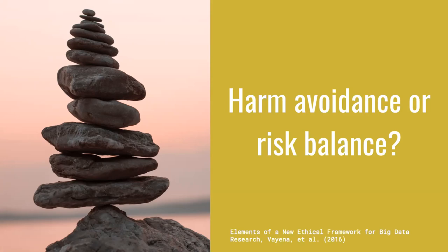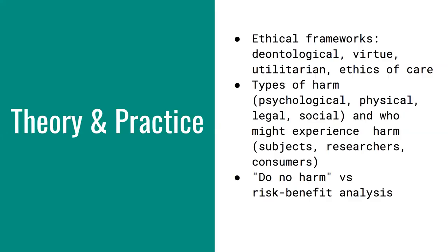The decision about whether to proceed with research based on these balanced factors is not binary. In this video, we noted that there is a lack of established best practices when approaching ethical considerations in TDM projects. Rather, this is an area of evolving discussion that we can help shape. We might consider different ethical frameworks, such as deontological, virtue, or utilitarian models, or an ethics of care. We might consider different types of harm — psychological, physical, legal, and social — and consider the different groups who could experience such harm, whether those be subjects, fellow researchers, or consumers. Ethical considerations are not just one-time judgments, but extend throughout the research process. Our ethical framework may lead us to adopt an approach that prioritizes doing no harm, or an approach that seeks to weigh harm through a risk-benefit analysis.